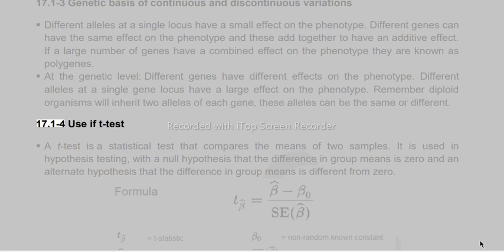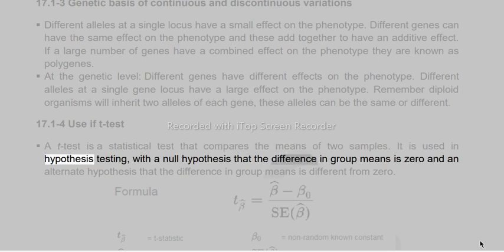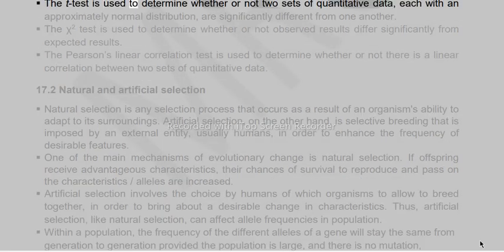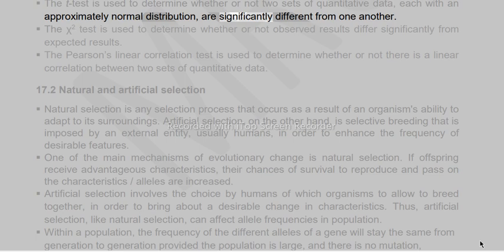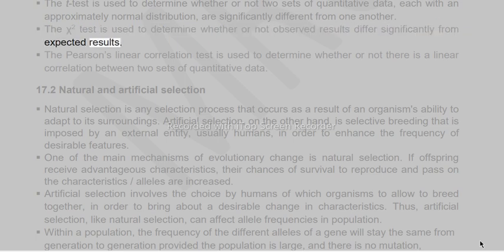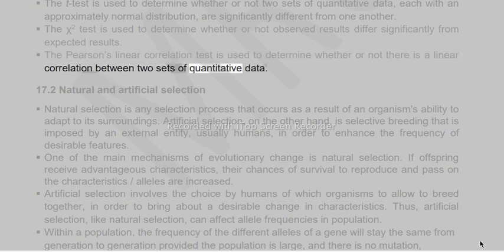A t-test is a statistical test that compares the means of two samples. It is used in hypothesis testing, with a null hypothesis that the difference in group means is zero. It is used to determine whether two sets of quantitative data, each with an approximately normal distribution, are significantly different. The chi-squared test is used to determine whether observed results differ significantly from expected results. The Pearson's linear correlation test determines whether there is a linear correlation between two sets of quantitative data.